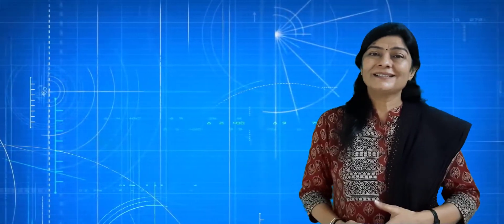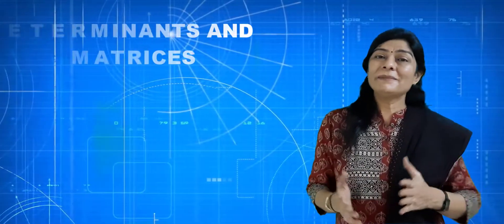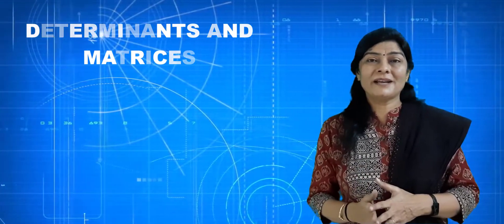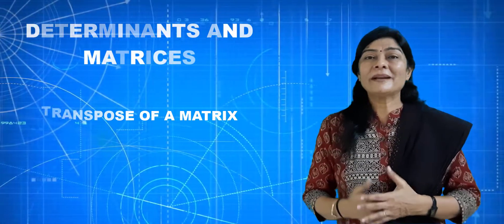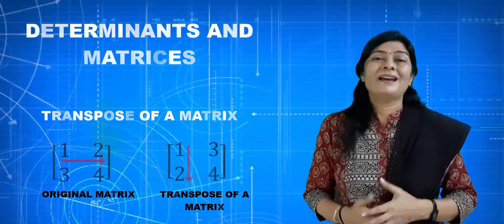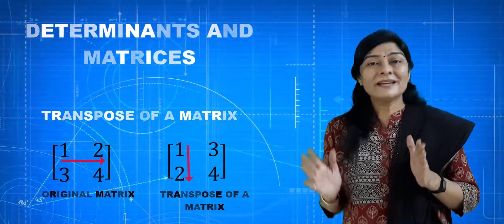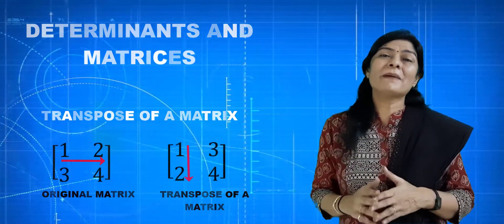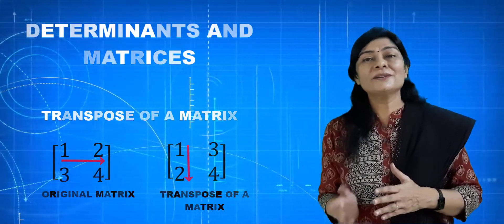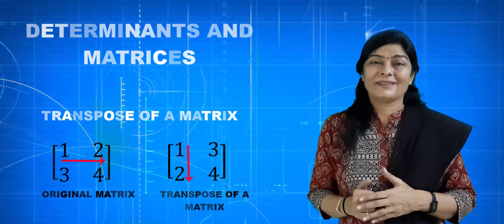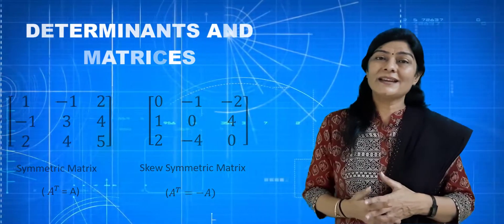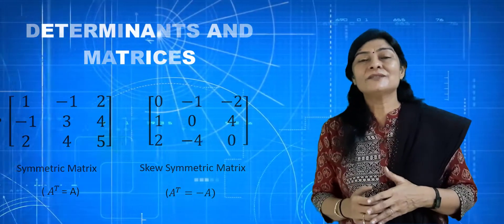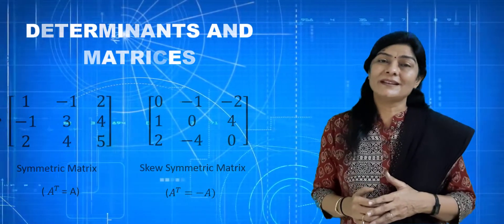Hello everyone, myself Pauna Thakkar. In the Determinants and Matrices unit, the previous lecture covered transpose of a matrix — a matrix obtained by interchanging rows and columns. Today, based on that, we will see two more types of matrices: symmetric and skew-symmetric matrices.